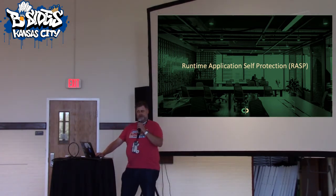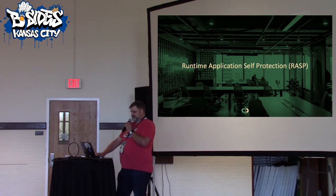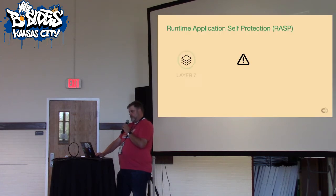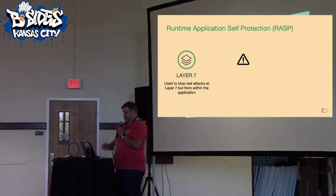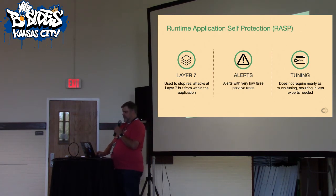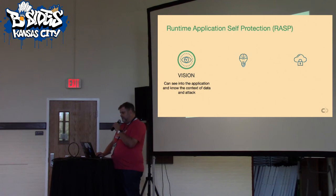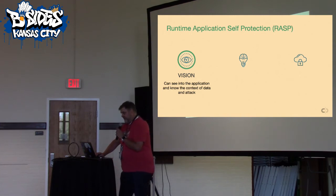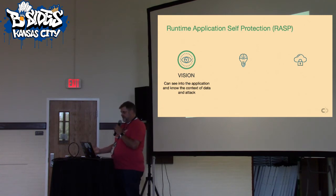Enter RASP — Runtime Application Self-Protection. I would say this is still a relatively new technology; it's been around for probably six or seven years but it's not fully mainstream yet. RASP is also a Layer 7 technology used to stop attacks on the application. It doesn't require tuning for the most part, based on the way it works. The alerting is very low because it works inside the application, so there's a very low false positive rate — the alerts are typically something you need to react to.